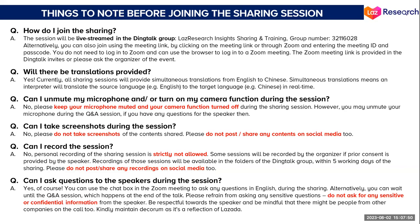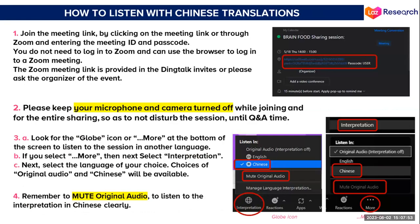There will be translations available. For those who want to listen to the session in Chinese, you can click on the interpretation function under the globe icon — or 'More' — at the bottom of the screen. You can choose Chinese, but we suggest you mute the original audio; otherwise you'll hear both English and Chinese at the same time, which may be confusing. That's basically it.